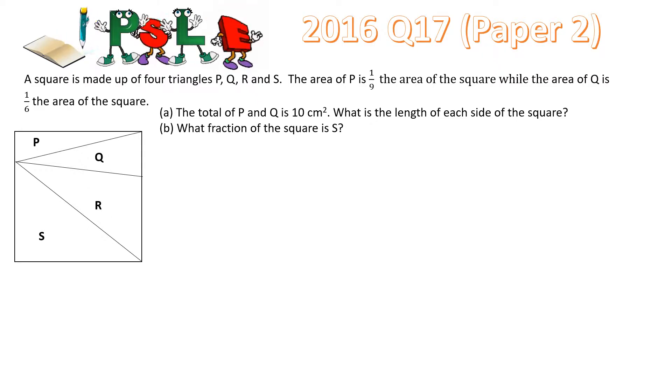A. The total of P and Q is 10 cm square. What is the length of each side of the square?